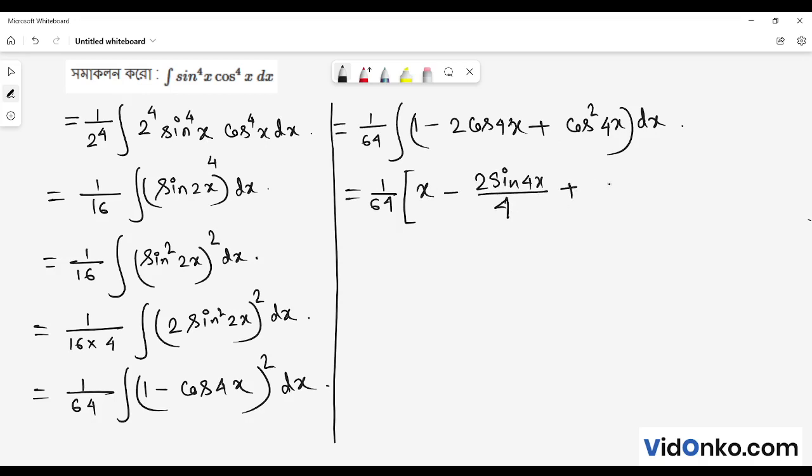1 by 64 integration of dx minus 2 cos 4x dx, which gives x minus 2 sin 4x by 4, plus the integration of cos to the power 2 of 4x dx.